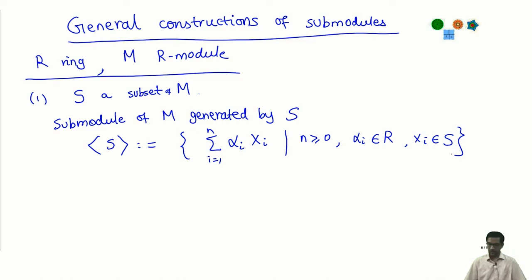This is all finite linear combinations. This thing here what I call alpha i x i is the scalar multiplication that is given because M is a module over the ring R. The submodule is just all what we would call linear combinations, finite linear combinations of elements of S and this is sort of what you would call a span in a vector space.